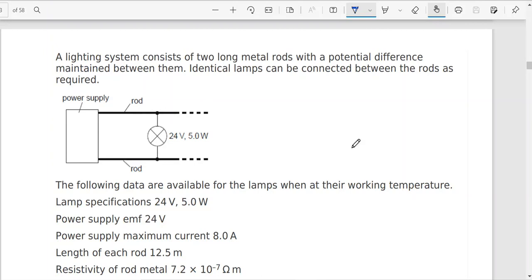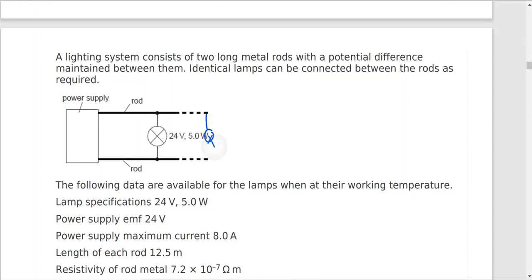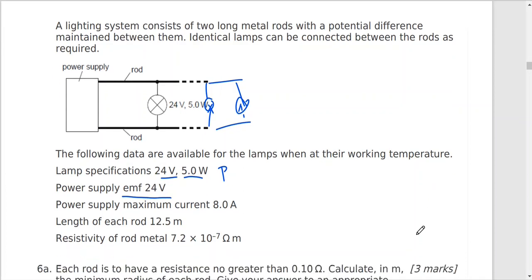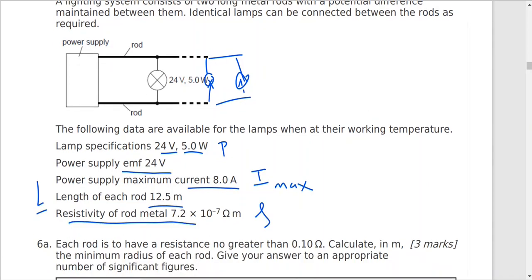Identical lamps can be connected between these two rods as required. So I have two rods and I can connect lamps between them. The following data are available for the lamps when at their working temperature. Lamp specification 24 volt, 5 watts. So this is the power and voltage for the lamp. Electromotive force supply 24 volt. The power supply maximum current, so here I have I maximum 8 amps. Length of each rod L 12.5 meter. Resistivity of the rod metal rho 7.2 times 10 to the power negative 7 ohm meter.